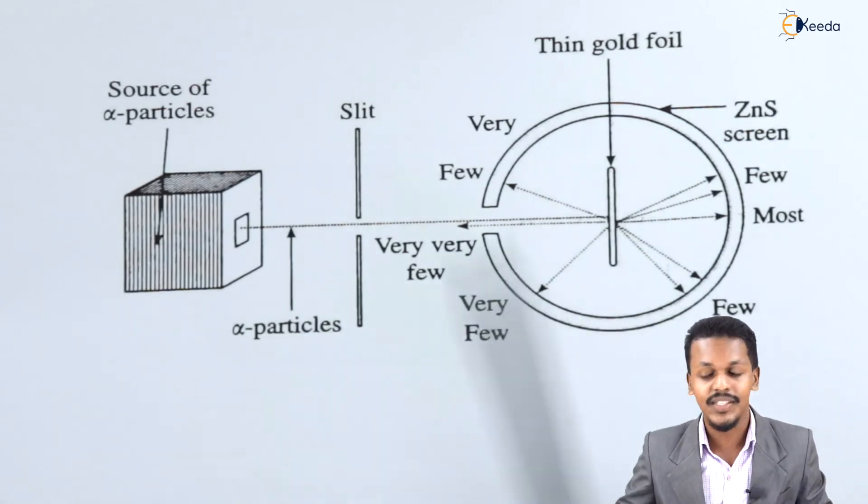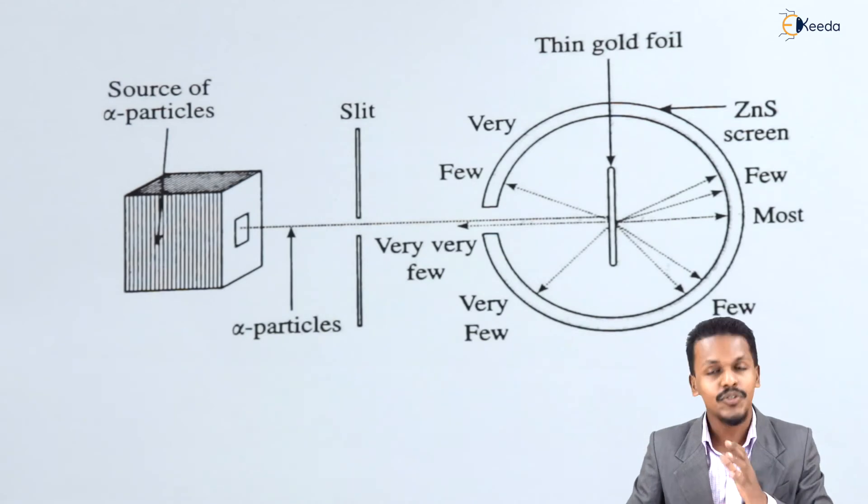So therefore, there were various predictions. This is how I was talking about the Rutherford experiment for the scattering of the alpha particles. And based on the conclusions, I'm going to talk about in the next topic. So for now, this is sufficient.